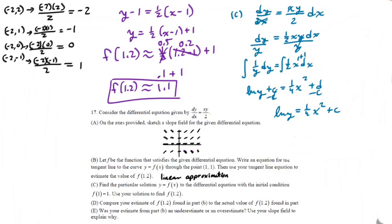To get Y alone we raise both sides to base E so the natural log cancels, leaving Y equals E to the power of (x² divided by 4 plus C). This is called the general solution to our differential equation. It is not a particular solution — if you want a particular solution, you must find C.